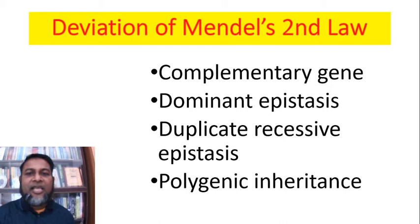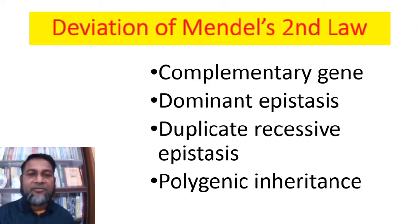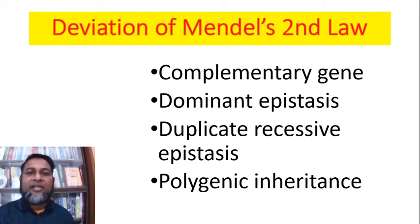Deviation of Mendel's Second Law — there are many deviations. Today we explain Complementary Gene. Other deviations are Dominant Epistasis, Duplicate Recessive Epistasis, and Polygenic Inheritance. These deviations will be explained in our next classes.